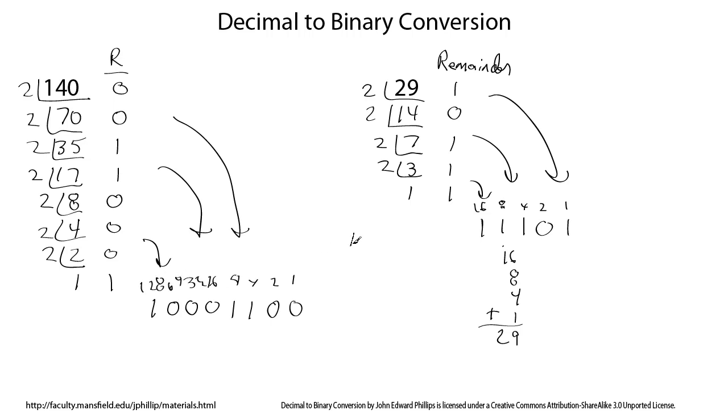And then so I have a 1 in the 128's column. A 1 in the 8's column. A 1 in the 4's column. So add those numbers up. We get 140. It checks. So this binary number is equivalent to the decimal number 140.